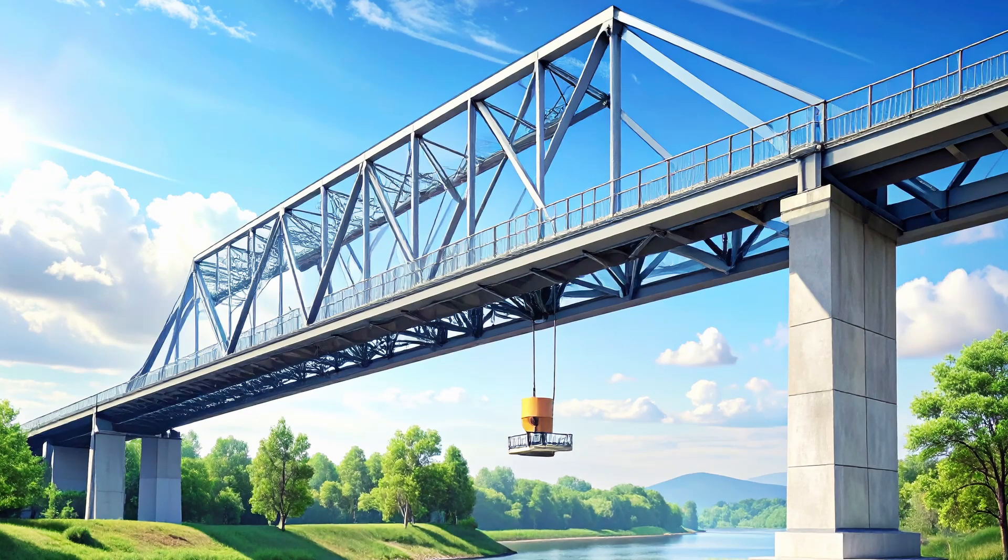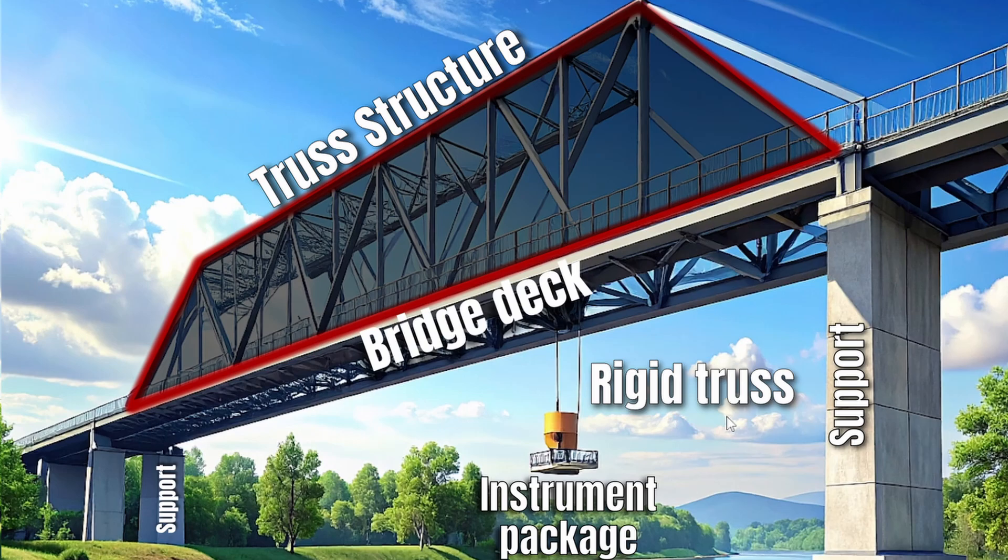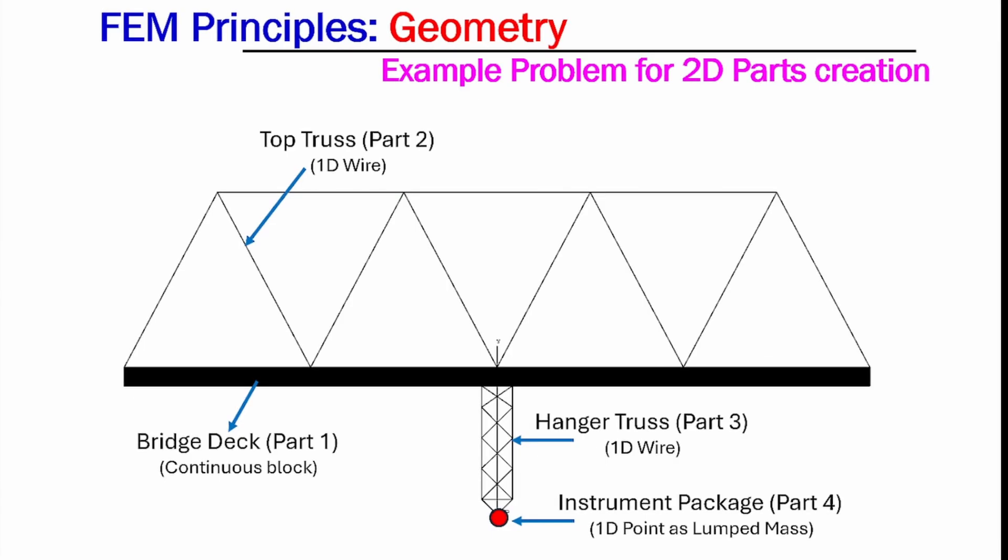Take a look at this truss bridge. It's a perfect real-world structure to guide our 2D modeling exercise. At mid-span, a rigid hanger supports an instrument package acting as a lumped mass to monitor bridge deflection. In this video, we'll translate the physical system into a 2D ABAQUS model by creating four key parts.